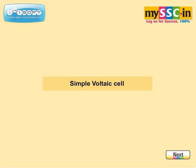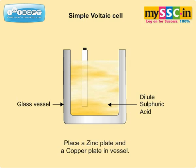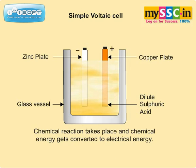Simple Voltaic Cell. Take a glass vessel containing dilute sulphuric acid. Place a zinc plate and a copper plate in the vessel. Chemical reaction takes place and chemical energy gets converted into electrical energy.